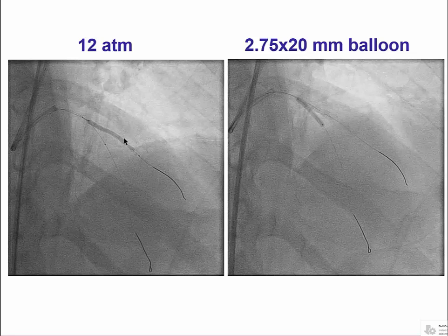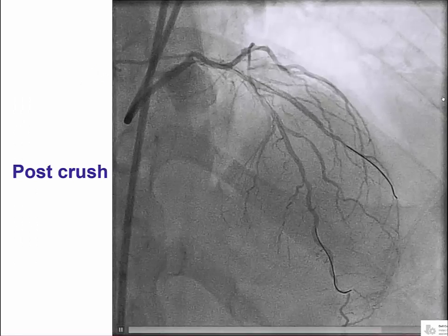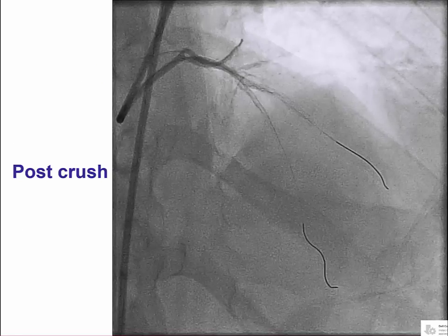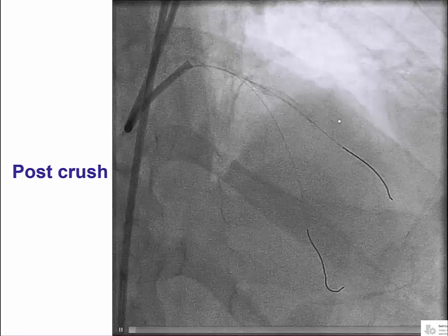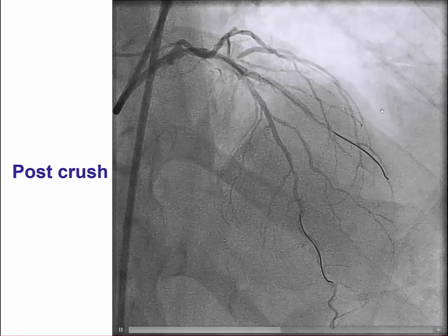After removal of the stent balloon, the side branch stent is crushed. We used a 2.75 by 20 mm balloon in the main vessel to crush the side branch stent. This is the angiographic appearance after crush, demonstrating good patency of the side branch with flow still present in the LAD.